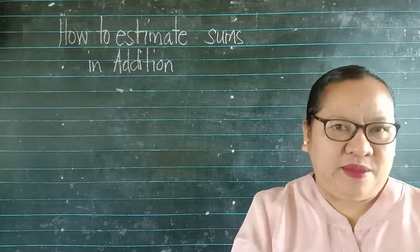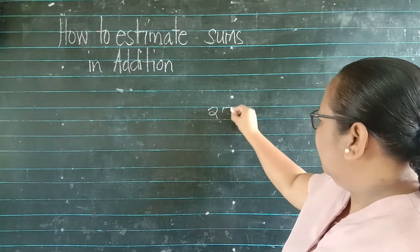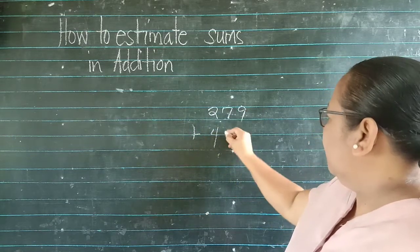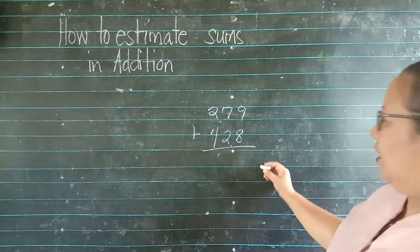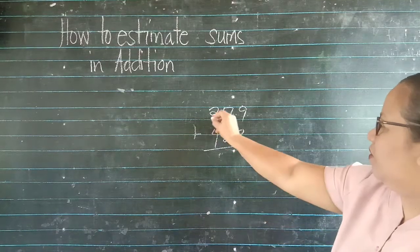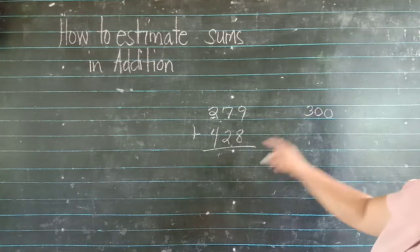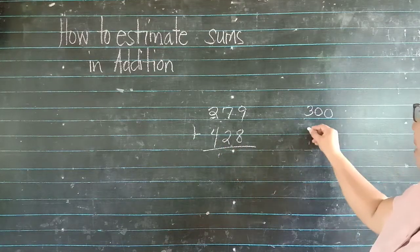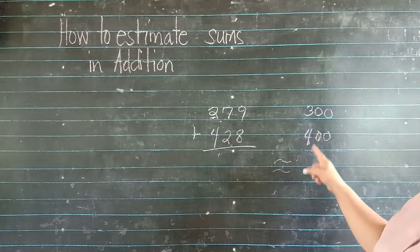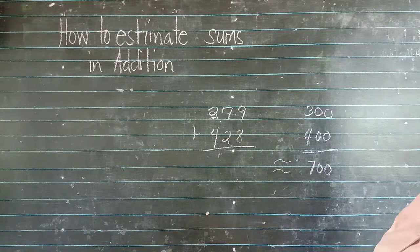Let's take another example kasi para magkakaiba ang sample natin. We have 279 plus 428. Estimate this to the nearest hundreds. Magiging 300. Ito naman ay magiging 400. Very good. Ang ating po estimated sum ay 700.